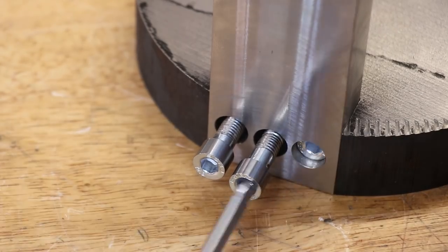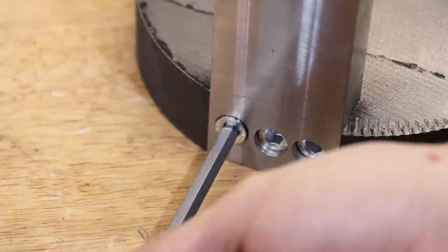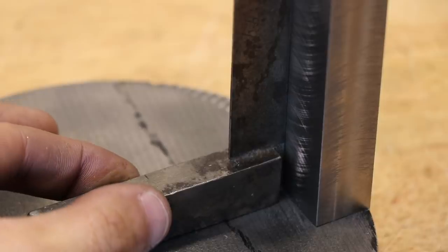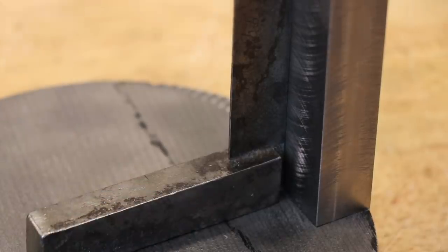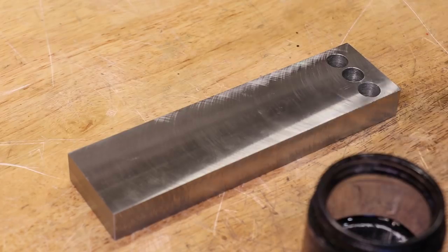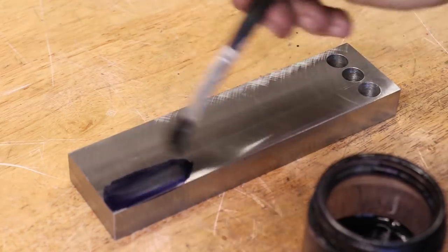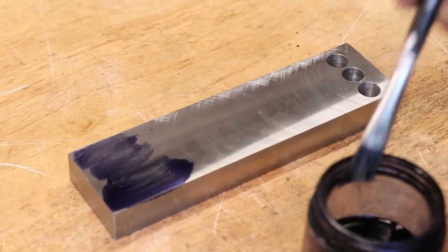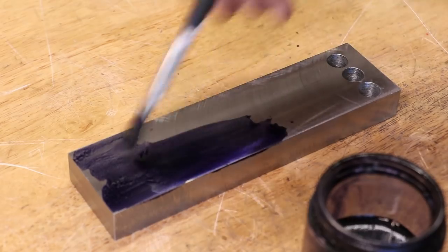The part was then bolted to the cast iron base. It feels very solid and a square indicates that they are perpendicular, though I will need to verify it using a dial indicator and the mill. I'm happy with the progress so far so I'll lay out the rest of the piece for the holes that I need to drill.